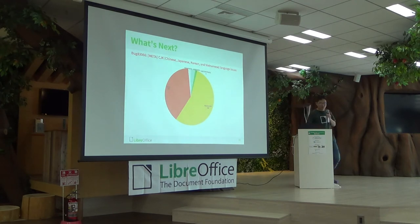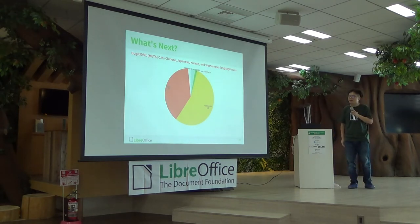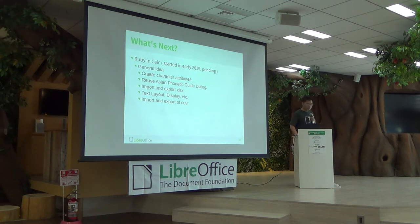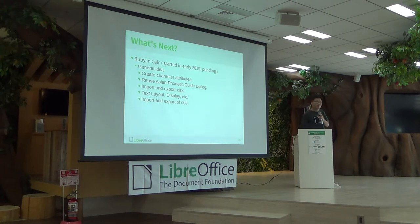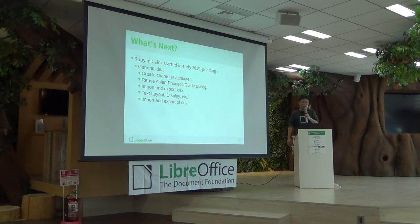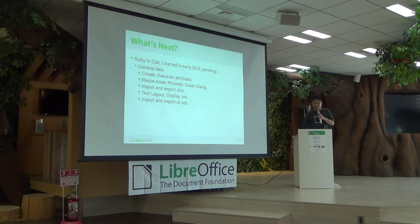So what's next? There are still about 90 issues on the CJK meta list, so there is quite a lot of things we can do. For example, I tried to start working on Ruby in Calc early this year. The general idea is that we can create character attributes similar to Writer, then reuse the Asian phonetic guide dialogue, then import and export from Excel format, then do the text layout and display, and finally develop attributes or properties for Open Document Format so that they can be imported and exported.